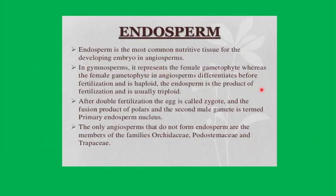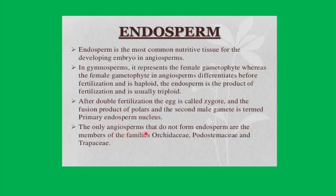The endosperm is the most nutritive tissue for the developing embryo in angiosperms. The female gametophyte in angiosperms differentiates before fertilization and is haploid, whereas the endosperm is a product of fertilization and is usually triploid. After double fertilization, the egg is called the zygote and the fusion product of polar nuclei and the second male gamete is the primary endosperm nucleus. Some angiosperms do not form endosperm — these are the families Orchidaceae (orchids), Podostemaceae, and Trapaceae, which are aquatic or hydrophytic plants.